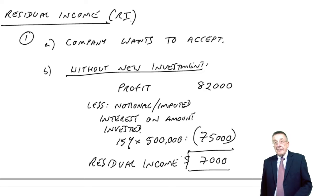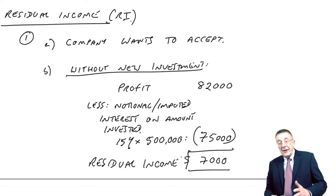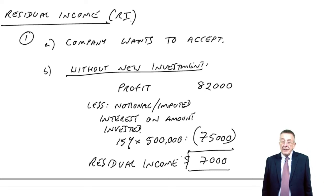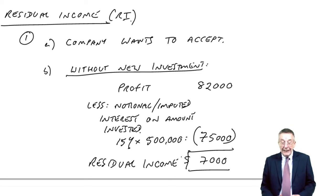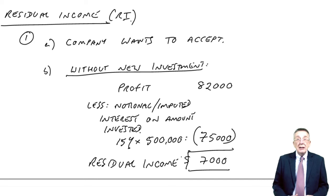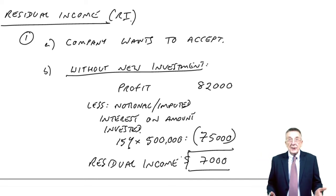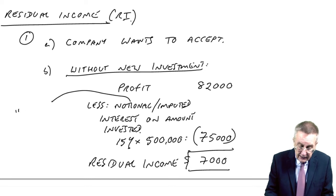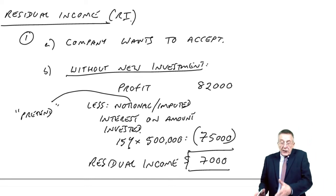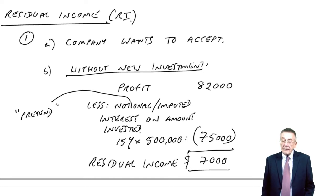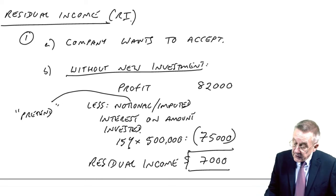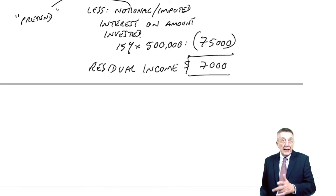We'll do that each year — if that figure increases, he'll get rewarded; if the residual income falls, he'll be punished. The reason I've called it notional or imputed is there is no actual invoice for interest; it means pretend. It's sort of like, give me some paper at the end of the year and just do a bit of arithmetic and see what figure we're left with. And so, when he's deciding whether or not to take the new investment, he'll say: what happens to my residual income? Does it go up or down?